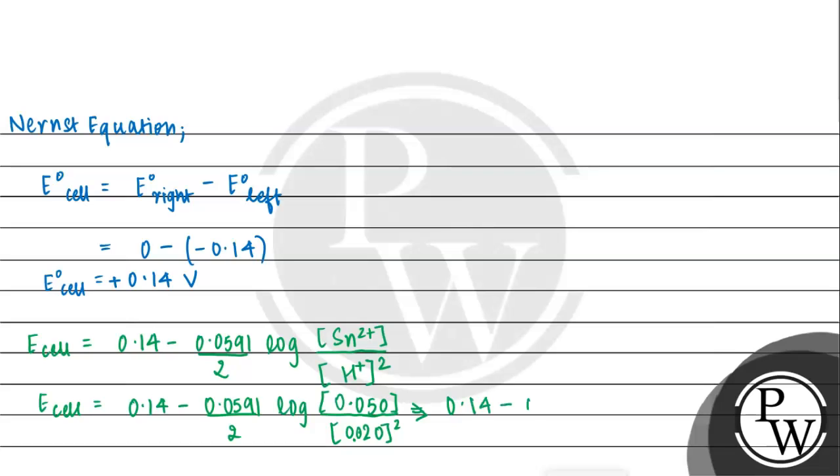Calculating further: 0.14 - (0.0591/2) log(125). The log value of 0.125 is 2.0969. So E_cell = 0.14 - 0.062 volts.